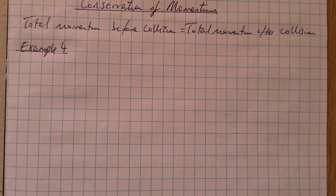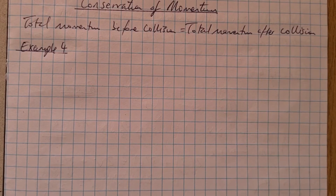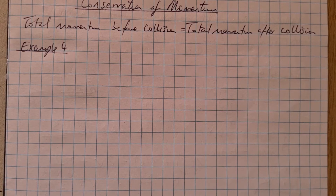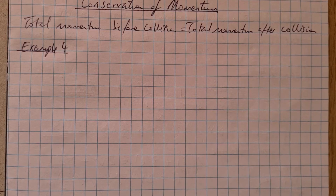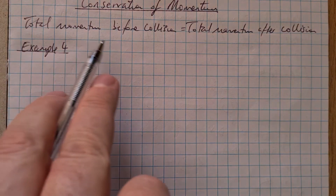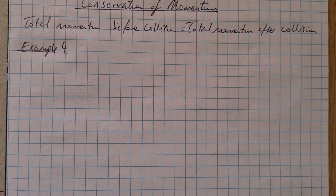Welcome to my second video on the AS component of the first chapter of FM1 on momentum and impulse. Here we're going to concentrate on the momentum before and after a collision. The total momentum before a collision equals the total momentum after a collision.